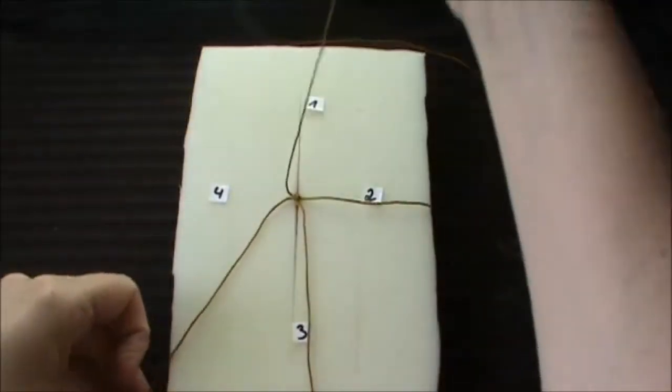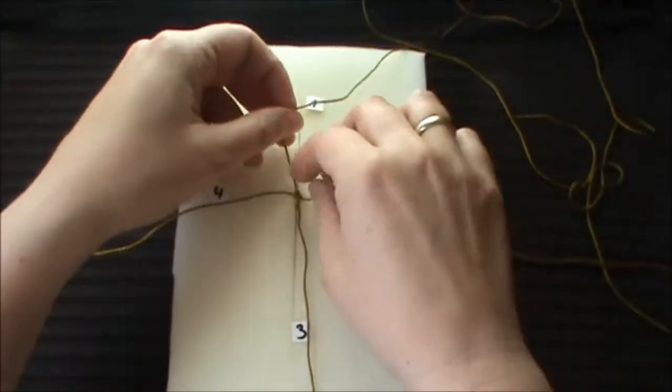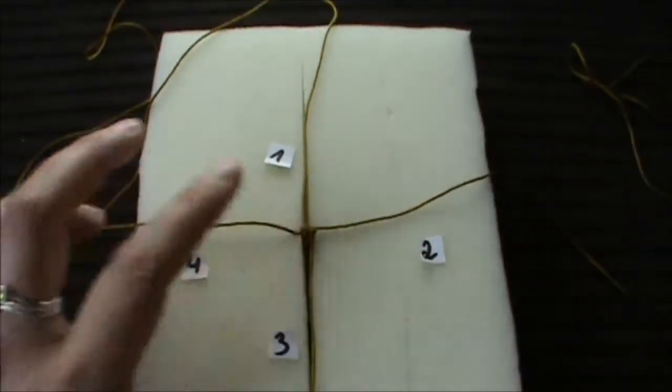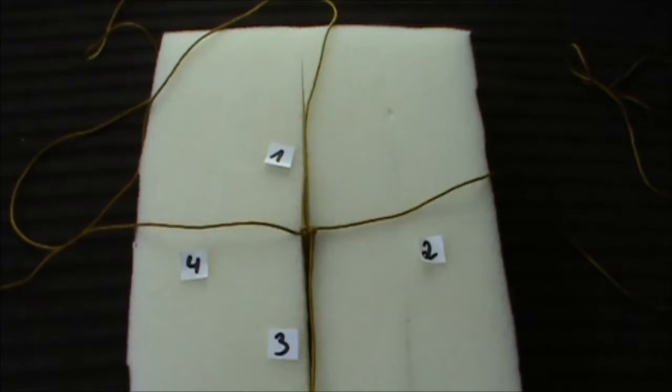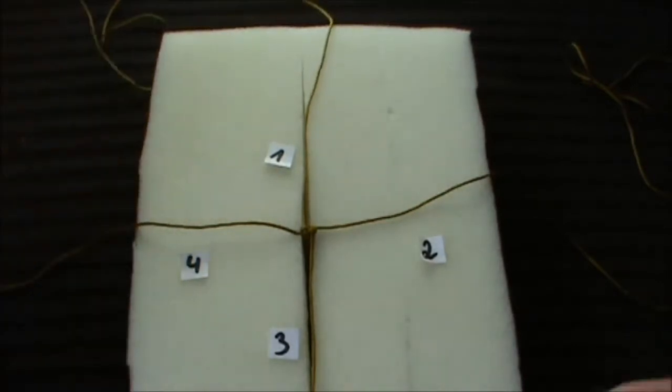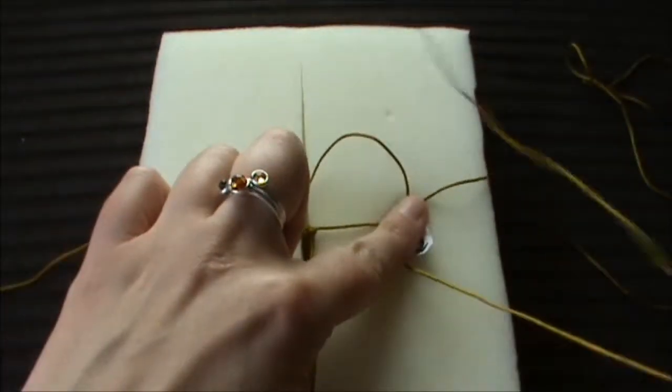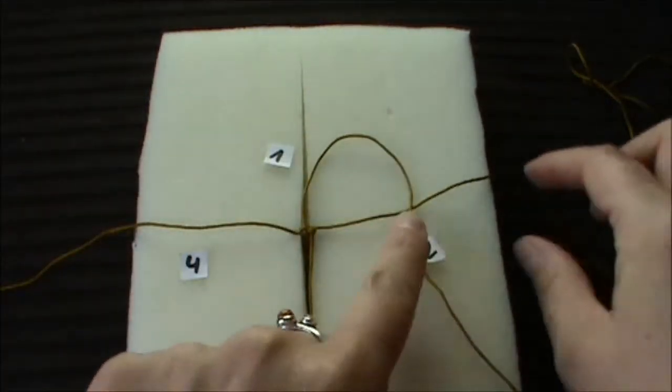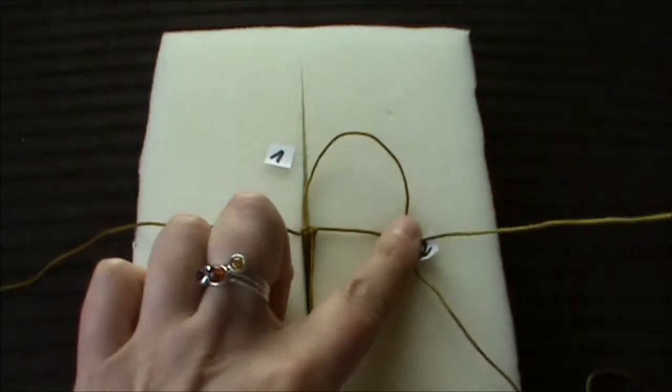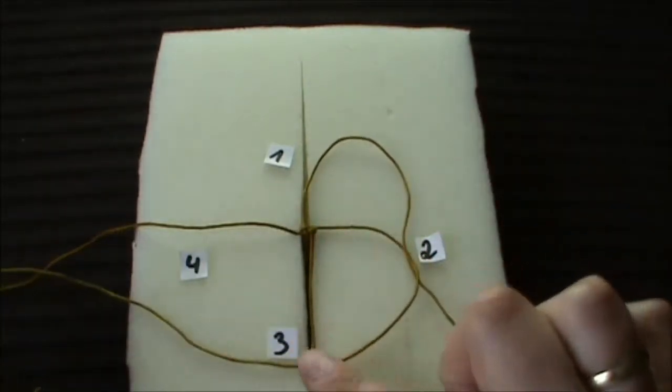And we want to do the second knot. I'd like to show you a little bit closer how you make the knot. You take string number one and put it over string two. Now you take string two and put it over string three.